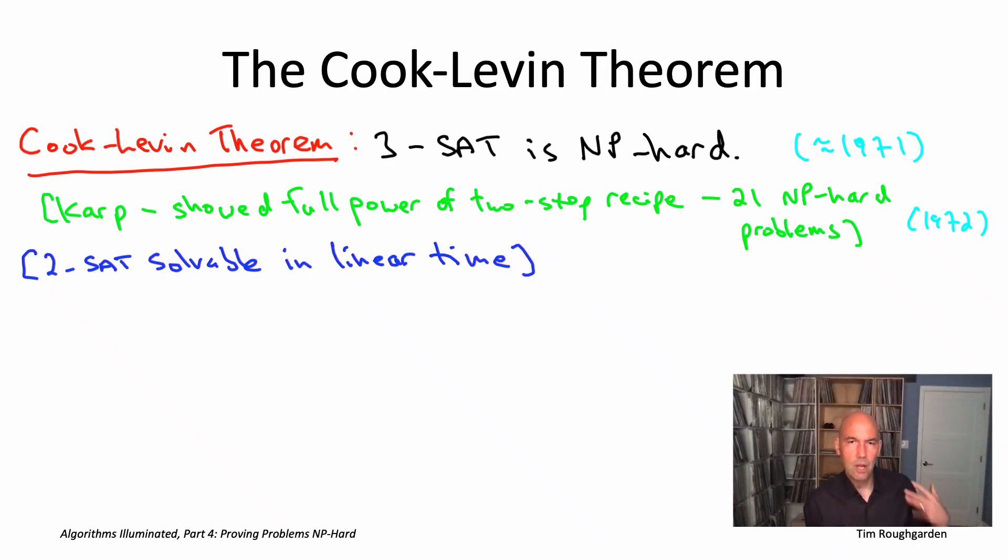We were talking about satisfiability in the context of SAT solvers, semi-reliable magic boxes that have some success solving the SAT problem in practice. The semi-reliability of SAT solvers is in no way in contradiction to the Cook-Levin theorem. The theorem says you cannot have a guaranteed fast and correct algorithm for 3-SAT. SAT solvers give you a sometimes correct and fast algorithm, which is not the same thing.